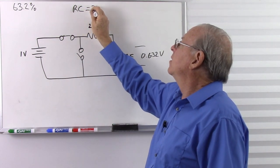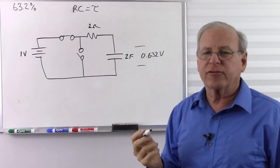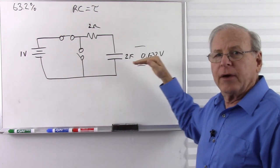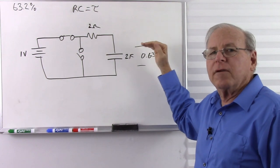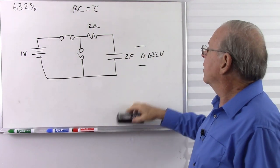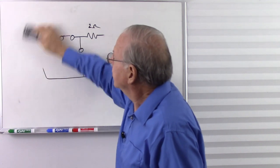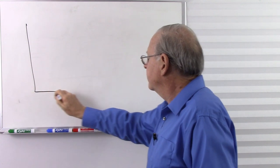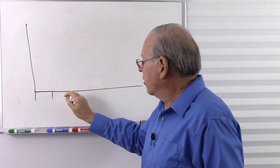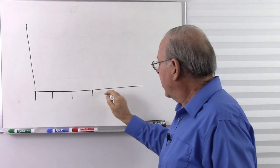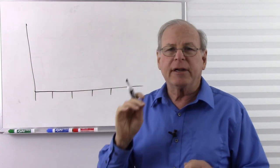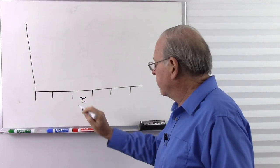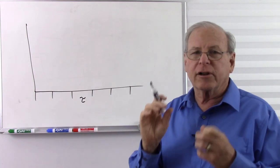The resistance times the capacitance gives us the time in seconds that it takes for the capacitor to charge up to 63.2% of the applied voltage. We call that tau — the Greek letter tau — which represents the capacitor time constant, determined by R times C. Then we found if we charged for another time constant, it would reach 63.2% of the remaining voltage.